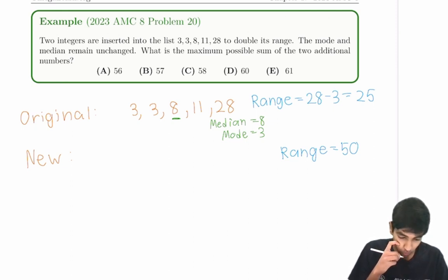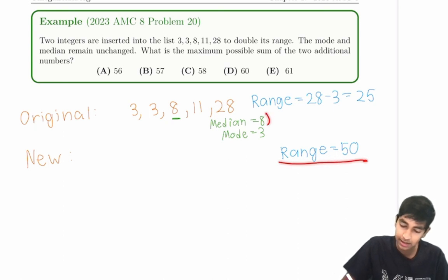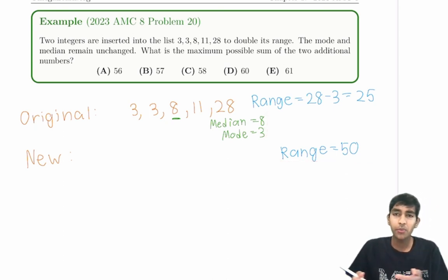Okay, so what should we focus on first? Which condition? Range equals 50, median equals 8, mode equals 3. How do we know which one to start with? So here's a little problem-solving tidbit. In these types of problems, it's always good to focus on the most restrictive condition first. The range is 50, there's many possibilities. The mode is 3, there's again many possibilities.